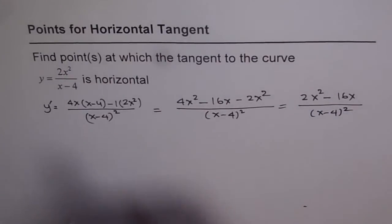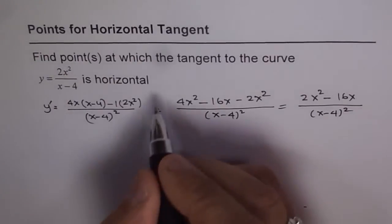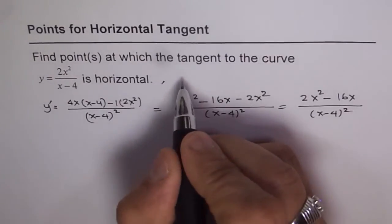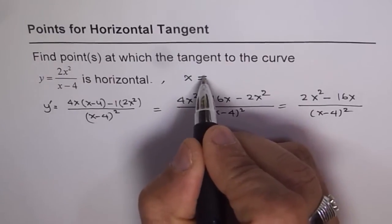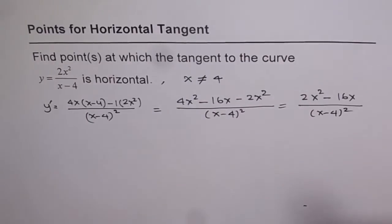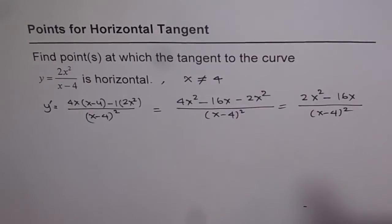Note, when we have a question like this, we should note that x cannot be equal to 0. So let's write here, x is not equal to 4. Because that would make denominator 0 and that is a restriction.